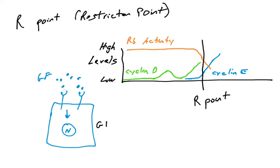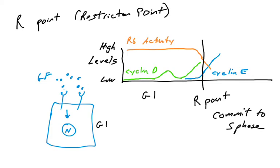That is the point of no return. Anytime before this, you can withdraw growth factor and the cell will stay in G1. Anytime after the R point, if you take away growth factor, the cell has committed to going into S phase — cyclin E levels are high enough and RB activity is low enough. The cell has now committed to S phase.